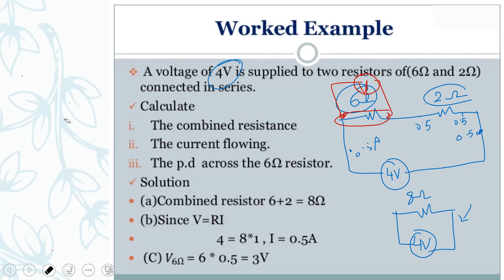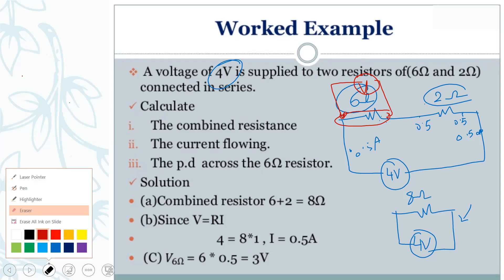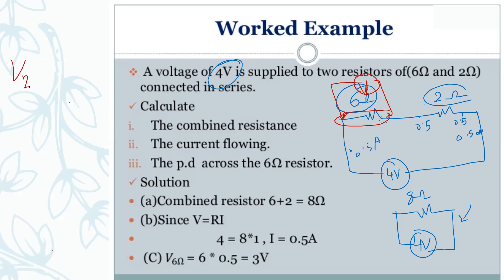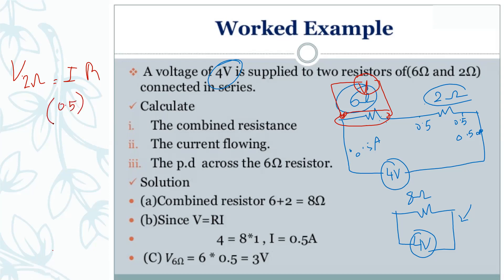Now I want to find the potential difference across the two-ohm resistance. Using V equals I times R: I is 0.5 ampere and the resistance is two ohms.